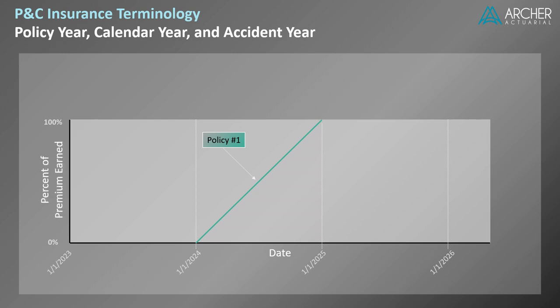Next, consider another 12-month policy written on December 31st of 2024. It can be represented by a line extending from December 31st, 2024 to December 30th of the following year. Notice that both policies were written in calendar year 2024 — January 1st and December 31st, respectively. However, collectively, premiums related to the policies are earned over a two-year period, between January 1st, 2024 and December 30th of 2025.